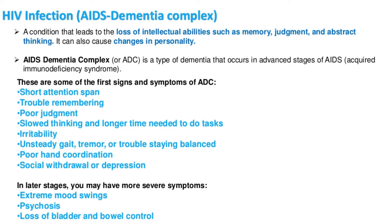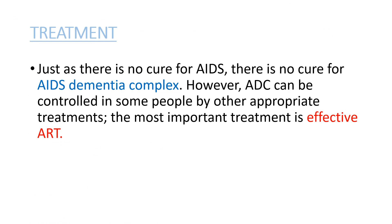HIV infection causes AIDS Dementia Complex (ADC), a condition leading to loss of intellectual ability such as memory, judgement, and abstract thinking, and changes in personality. ADC occurs in advanced stages of AIDS. Early signs include short attention span, trouble remembering, poor judgement, slow thinking, irritability, unsteady gait, tremor, poor hand coordination, and social withdrawal or depression. In later stages, more severe symptoms include extreme mood swings, psychosis, or loss of bladder and bowel control. Just as there is no cure for AIDS, there is no cure for ADC; however, it can be controlled in some people, and the most important treatment is effective antiretroviral therapy (ART).